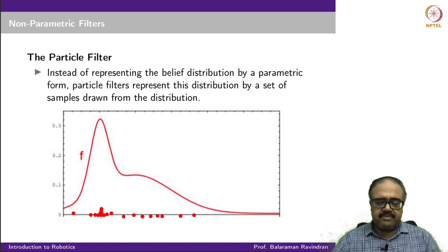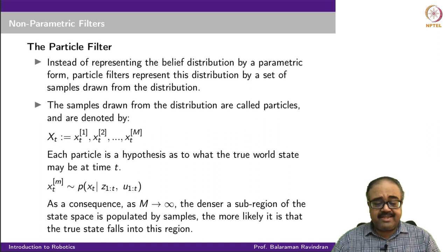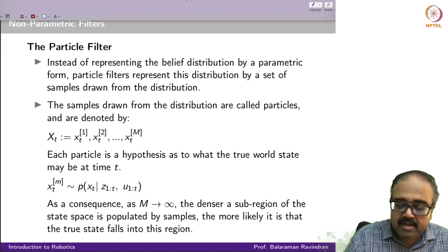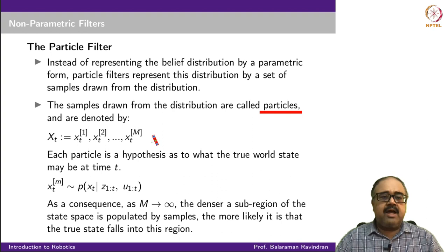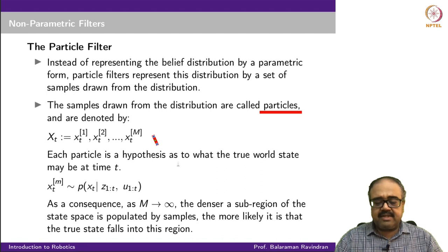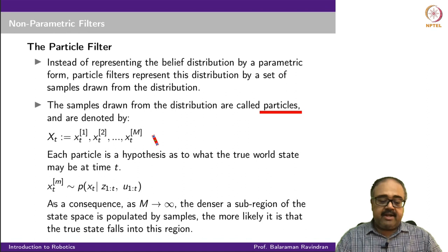In the particle filter, we store a set of samples drawn according to the distribution as opposed to storing parameters like mu and sigma. We store a set of samples drawn from the distribution — that is our representation of the belief. These samples are called particles, denoted x1 to xN, forming a set of M particles. Each particle is a hypothesis about what the true world state may be at time t.